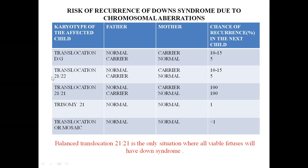Balanced translocation 21-21 is the only situation where all viable fetuses will have Down syndrome — this is a very important point. Associated abnormalities: congenital heart disease is the most commonly associated finding, with endocardial cushion defect being most common (40–60%). Conductive hearing loss also 40–60%. Atresia and annular pancreas commonly seen. Ophthalmic problems like cataract, nystagmus. Hypothyroidism 15–34%. Atlantoaxial subluxation 10–30%. Linear growth retarded. Malignancies: AML M7 variant more common and ALL. Newborn period: transient lymphoproliferative syndrome.